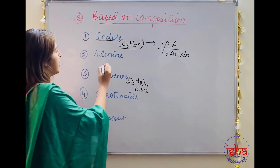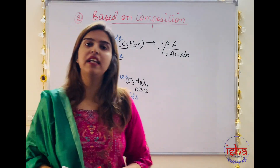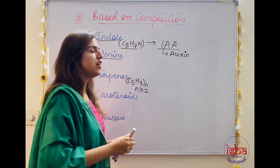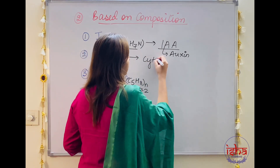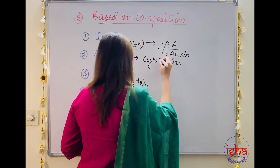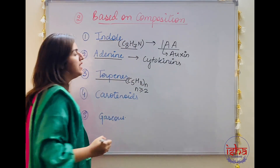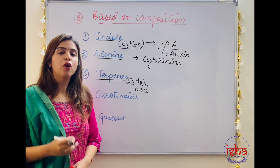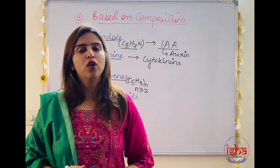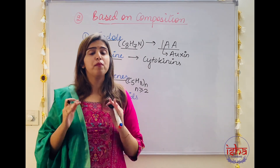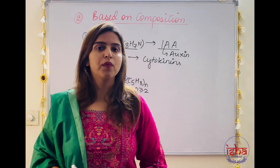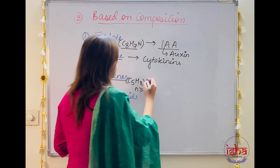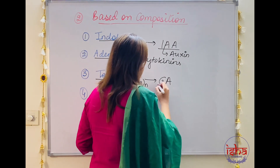Second, phytohormones could be adenine derivatives, that is purine derivatives. Adenine is a nitrogenous base also found in DNA. The phytohormones that fall in this category are cytokinins. Third, there are terpene derivatives. Terpenes are hydrocarbons with the formula C5H8n, where n is any value greater than or equal to 2. They are important building blocks in biological systems and provide the aromas and smells found in plants. Terpene derivatives include gibberellic acid — the gibberellins.